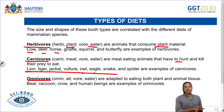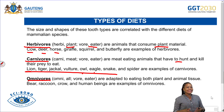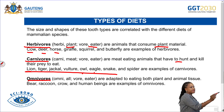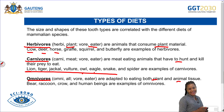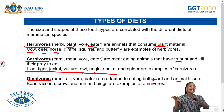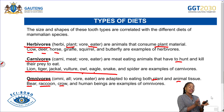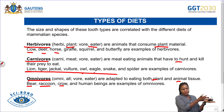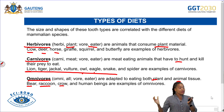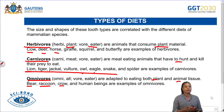Omnivores are plant and animal eaters — they feed on both plants and animals. Examples include the bear, raccoon, crow, and human beings. We also fall under omnivores, as we eat both plants and animals.